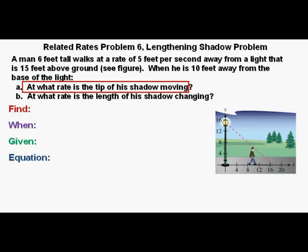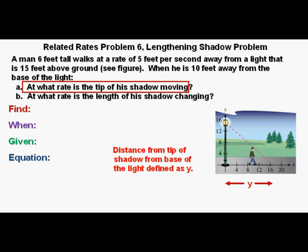Here we are with our find, when, given, an equation. What are we trying to find? The rate the tip of his shadow is moving. In order to mathematically define that rate, which is the rate the shadow is moving away from the base of the light pole,